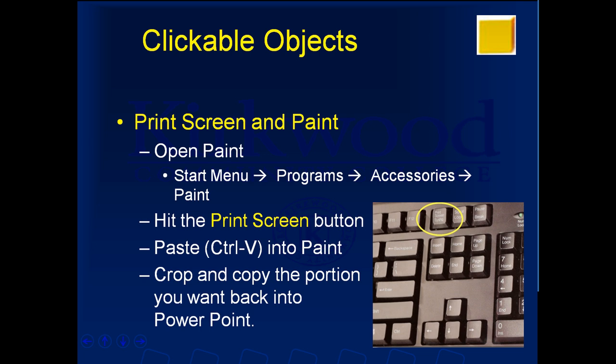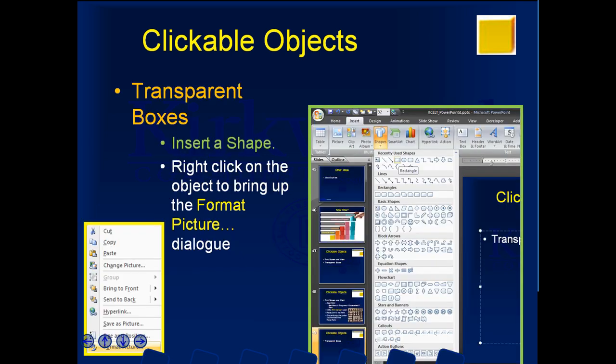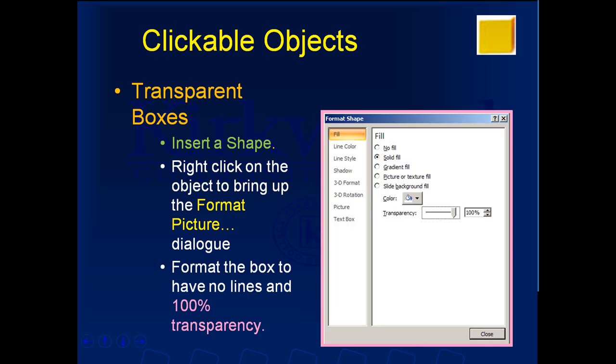Another clickable object is simply a transparent box. What you're going to do is insert a shape, then right-click on that shape to bring up the Format Picture dialog. You're going to format that box to have 100% transparency. It's very important that it has a solid fill so PowerPoint knows you're clicking on it, but we set it to 100% transparency so you can't see it.